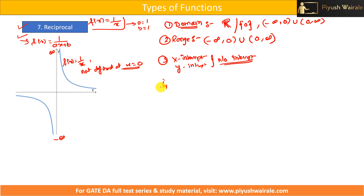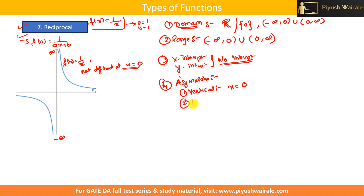What about the asymptote? An asymptote is basically a straight line that a curve will never touch, even at an infinite distance. The function 1/x has two asymptotes. The vertical asymptote is x = 0, and the horizontal asymptote is y = 0, since the graph approaches but never touches the x-axis.